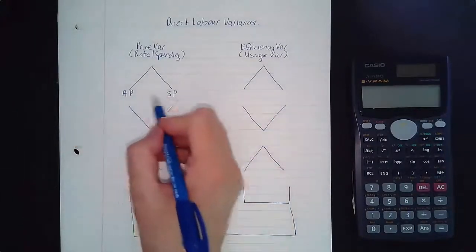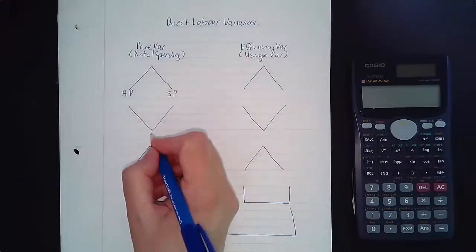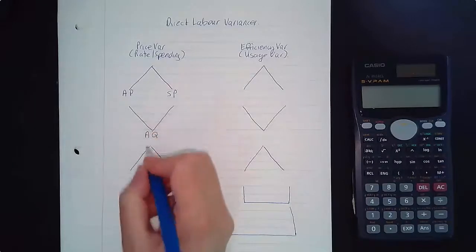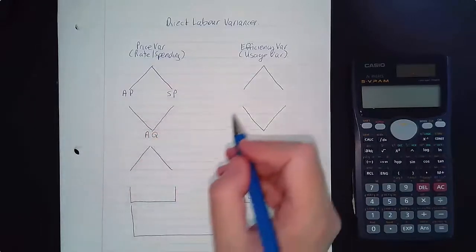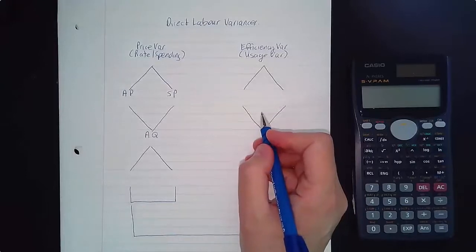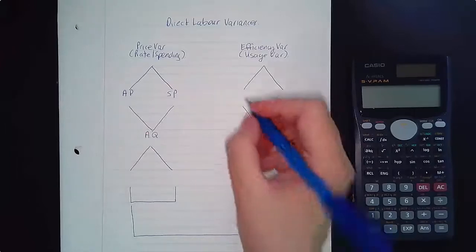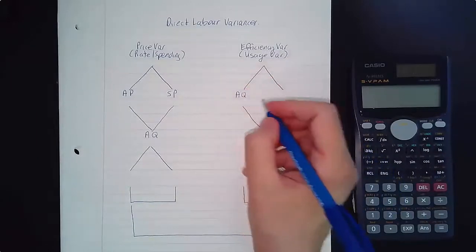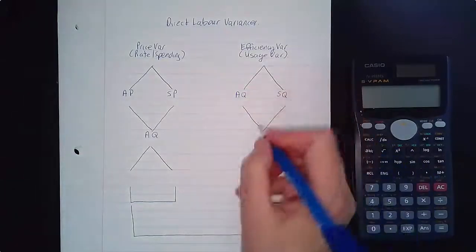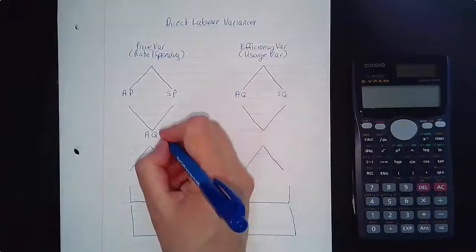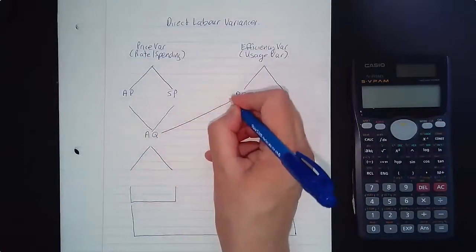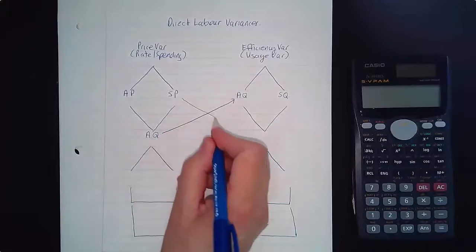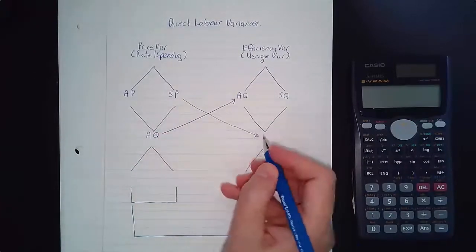I've got price listed first because this is the price variance. At the bottom of that first diamond, I'm going to put in the actual quantity — the actual number of hours that my employees worked. Moving over to the efficiency variance, using A to Z again: the left-hand side is the actual quantity that my employees worked, and the right-hand side is the standard quantity. Notice that the actual quantity from the price variance is carried up to the actual quantity in the efficiency variance, and the standard price is taken down from the price variance into the efficiency variance.